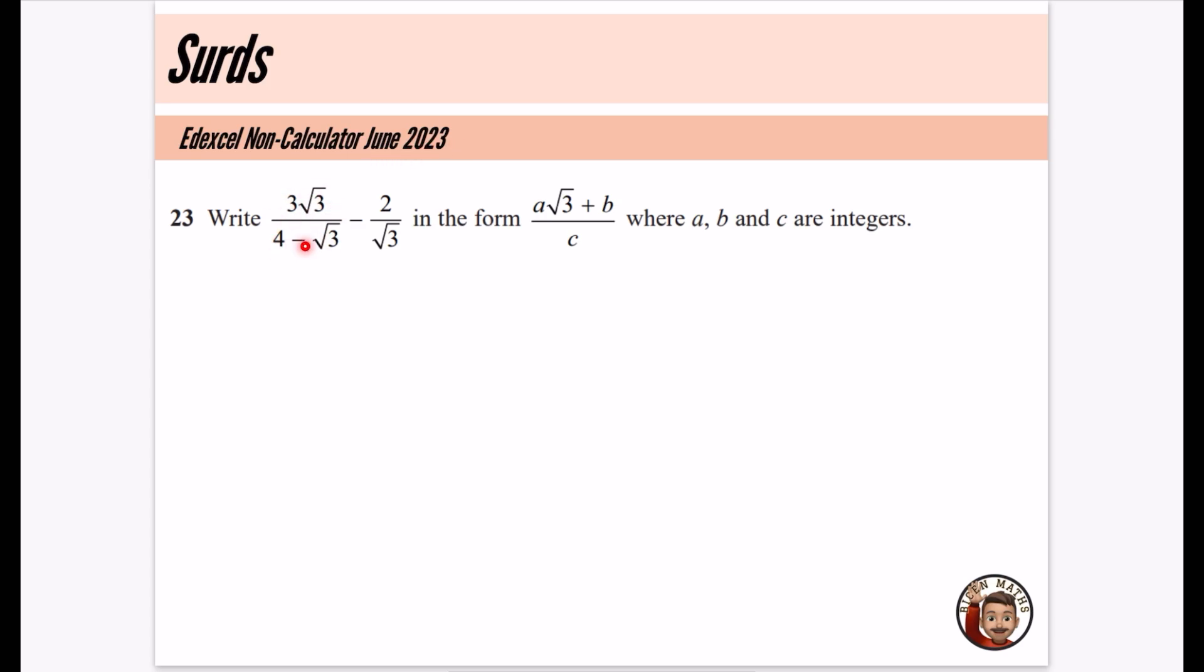We've got two different fractions here, both which have got an irrational denominator. They want it to be written in this form here. We'll notice where A, B and C are integers. We'll notice that the denominator here is rational. So really what we're being asked to do here is to rationalize the denominator.